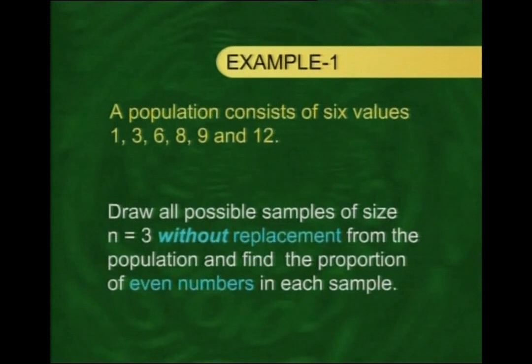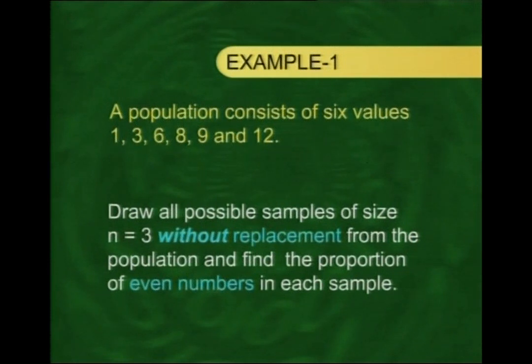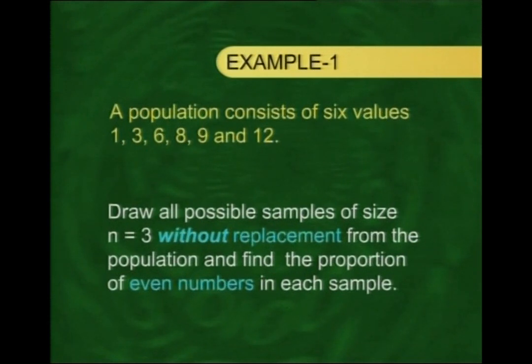Let me explain this concept with an example. Suppose a population consists of 6 values: 1, 3, 6, 8, 9, and 12. If we regard the occurrence of an even number as success, then the proportion of successes in this population is 3/6, which equals 1/2, because there are 3 even numbers: 6, 8, and 12.